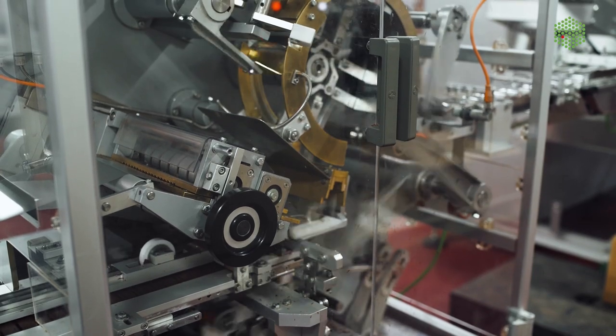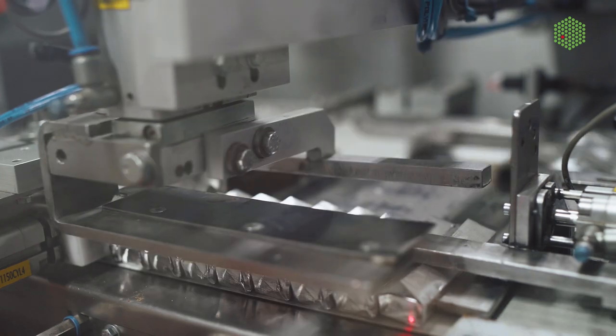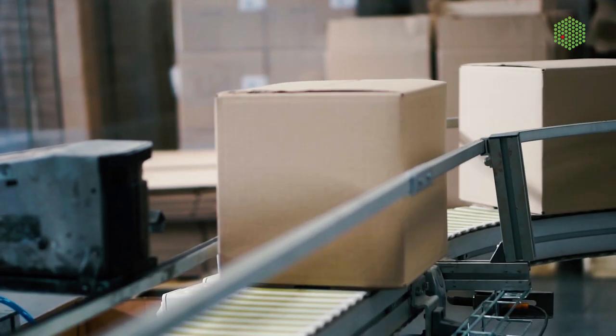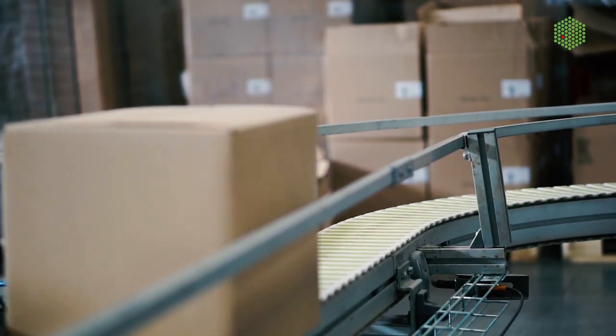Imagine a factory where conveyor belts transport products from the production line to packaging and then to distribution. A similar process takes place in our cells with proteins and it is called the secretory pathway.